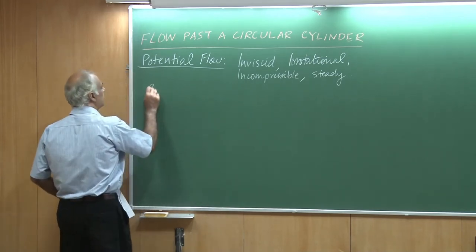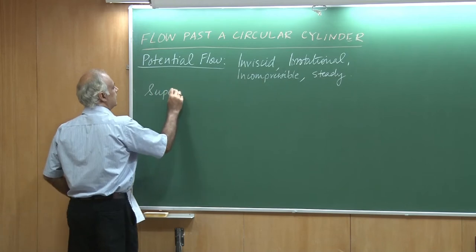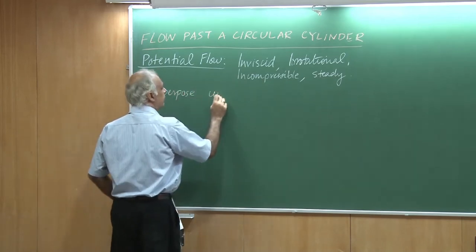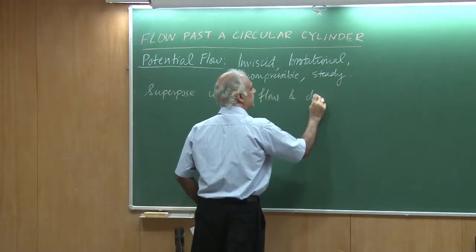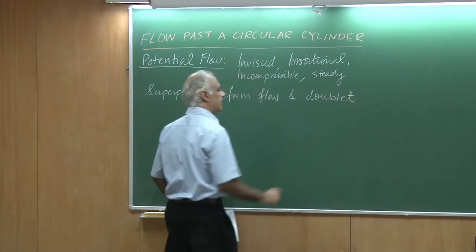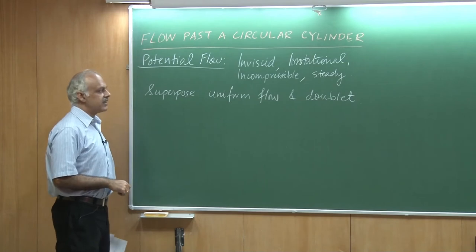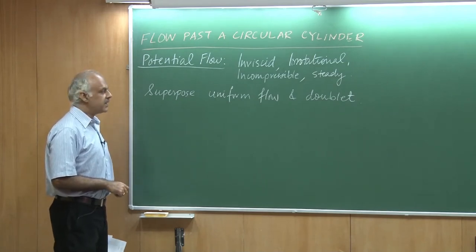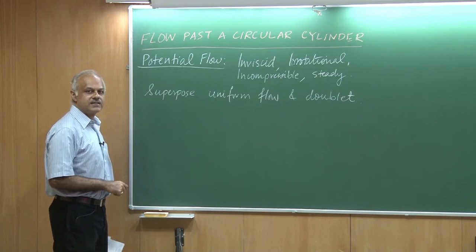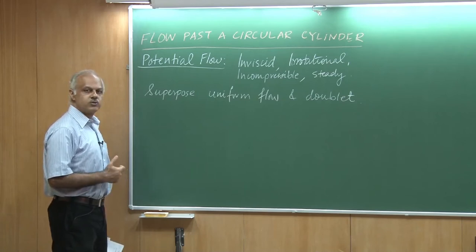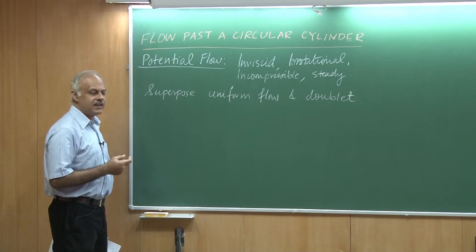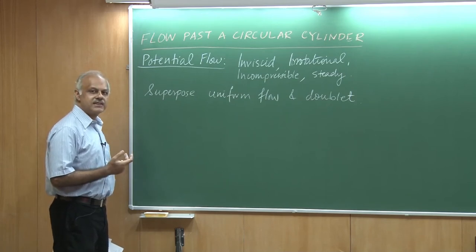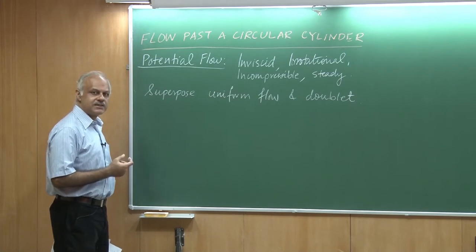We are going to first talk about superposing a uniform flow and a doublet. I showed you in the last session that we could get a doublet by bringing in a set of source and sink. The idea was that the source squirts out fluid, the sink collects it, and they become very close to each other while the strength also increases to a very large extent, such that the strength times the distance between them is a finite quantity.